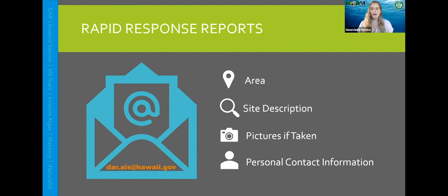If you're out collecting photos for this AIS challenge and you see something that you think is more emergent and warrants a rapid response, you can always email our DAR AIS email: dar.ais@hawaii.gov. We would hope that you include the area where you saw it, the species of concern, a site description of where you found it, pictures if you were able to take them, and personal contact information — either an email we can respond to or a phone number so we can get back to you if we have any questions.